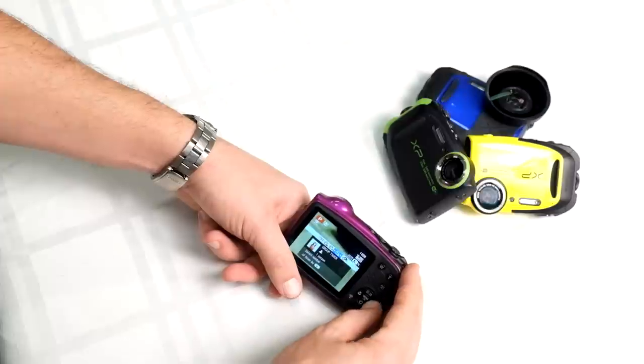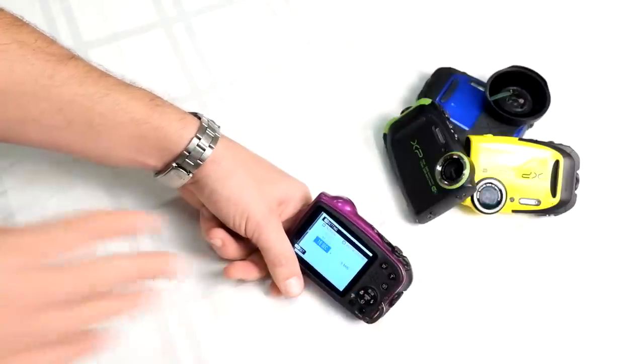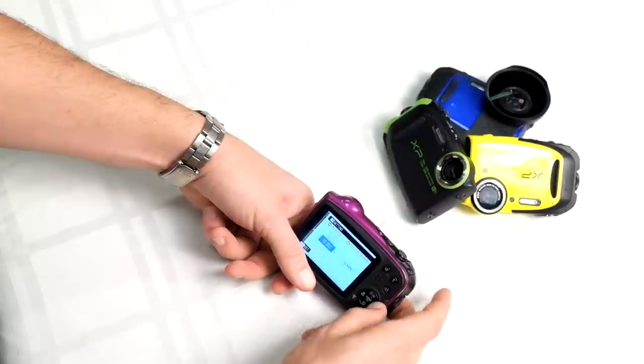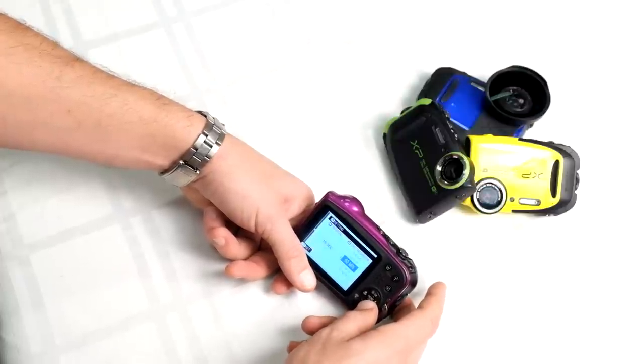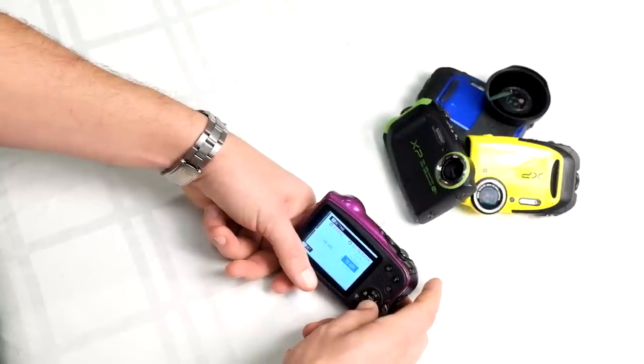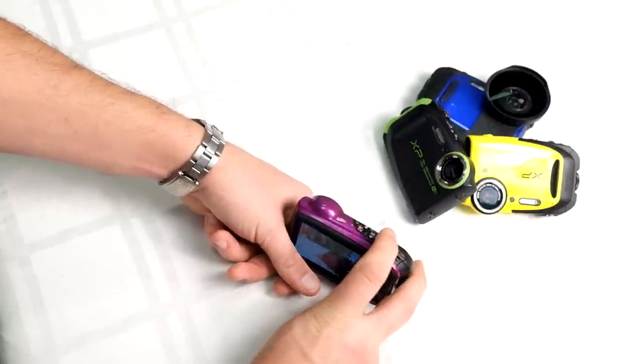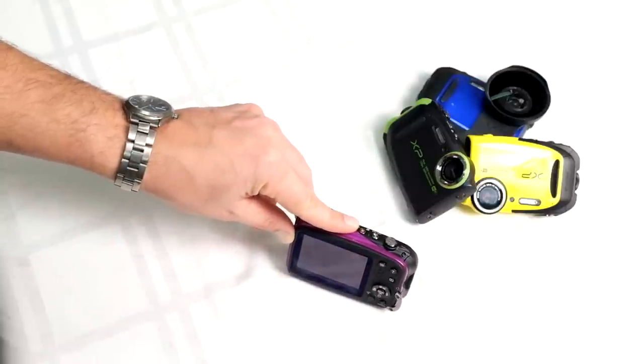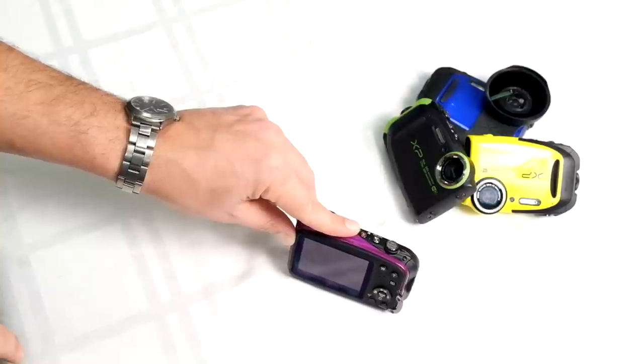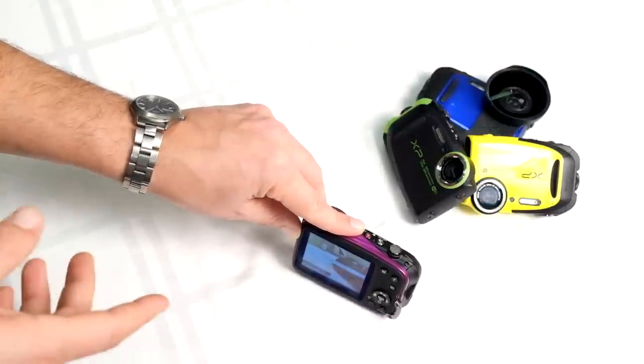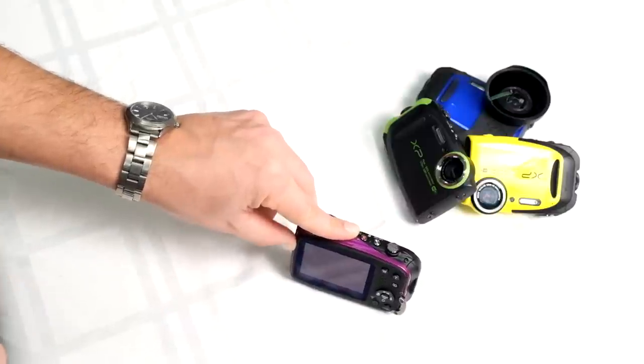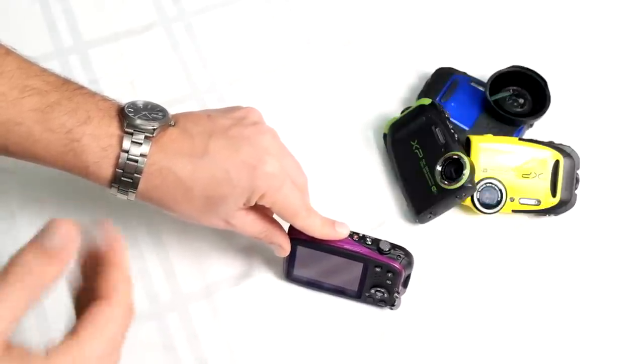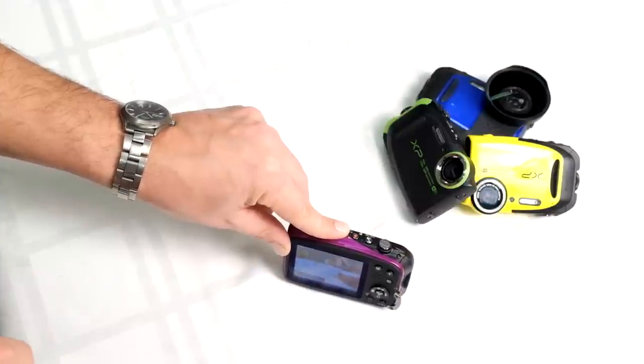The other self-timer mode is interval shooting. Once you choose interval shooting, it gives you the choice of what interval - up to one every ten minutes. I'm gonna set it to 15 seconds, and you can set it up to 60 minutes or even six hours. When you hit the shutter release, the screen goes black and goes into sleep mode. It'll take multiple shots - one picture every 15 seconds - so you end up with multiple shots to work with.